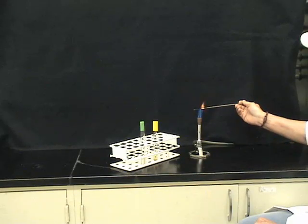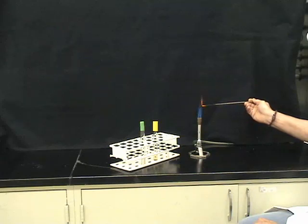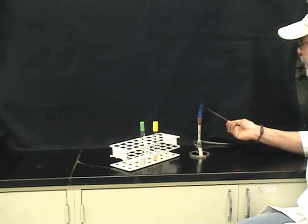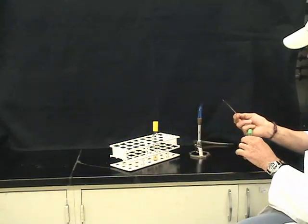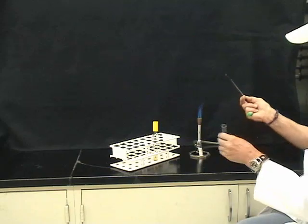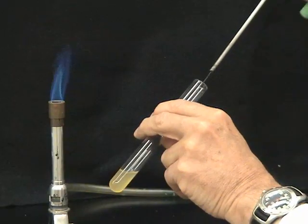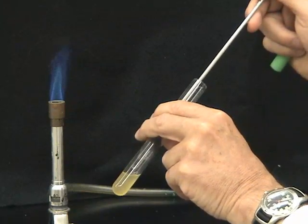Here is shown the actual tube transfer procedure. The loop is first sterilized and then allowed to cool. During the cooling, the source tube is taken up and its plug or cap removed. The now cool loop is placed into the tube, taking up a small volume of culture that will be transferred to the destination tube.